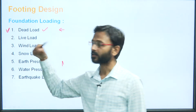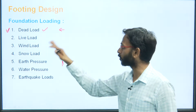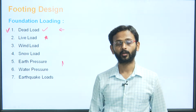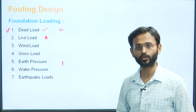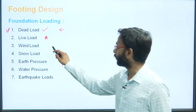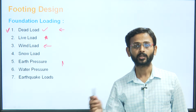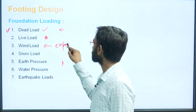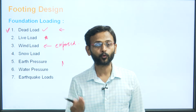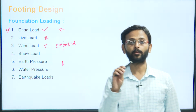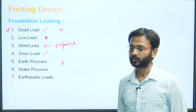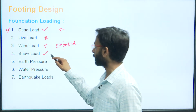Dead load comprises the weight of slabs, columns, and all permanent loads. Live load is a very variable quantity not determined by direct formulas; it is given by IS codes or different building codes. Wind load acts on all exposed surfaces as lateral forces, and depending on the direction of the wind, these can also be inclined forces. Next is snow load, which is basically in colder regions and acts on rooftops.